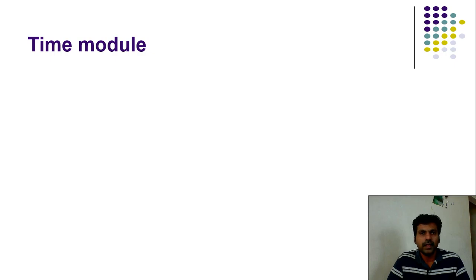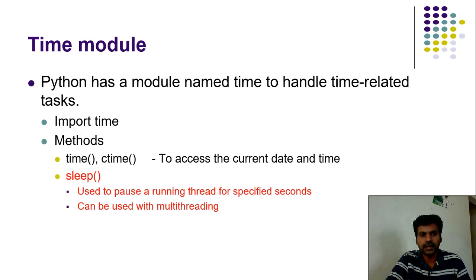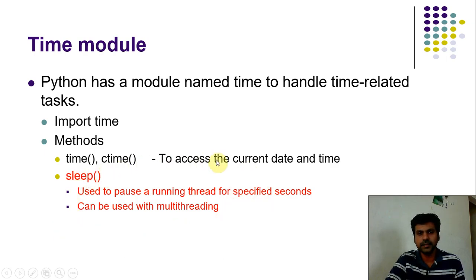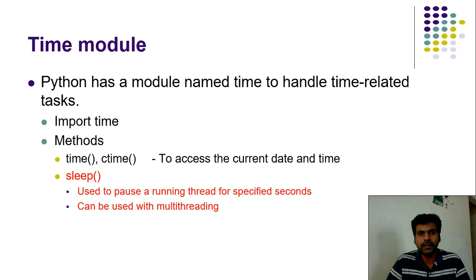We can also use the time module in multi-threading. The time module is used to deal with time and date data - it provides functions like time() and ctime() to access the current date and time. There is also an important sleep() function. We can use sleep() to suspend a thread for a period of seconds, for example to pause a thread for one second, and it can be applied to all types of multi-threading applications.